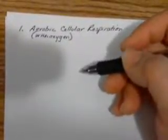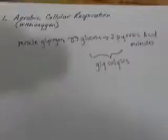Glycogen, muscle glycogen found within the muscle, gets broken down into glucose. This glucose then is broken down into two pyruvic acid molecules. By glucose breaking down into pyruvic acid, this is known as glycolysis, one of the steps of aerobic cellular respiration.